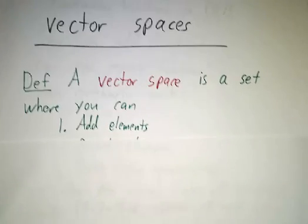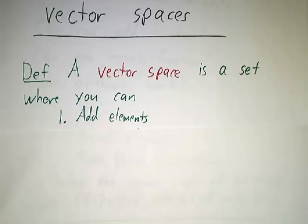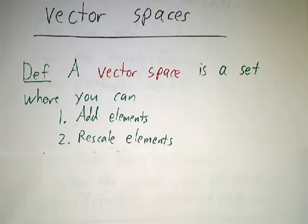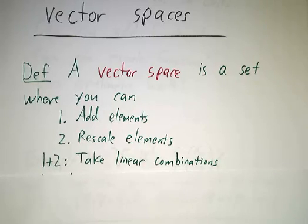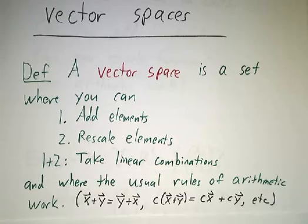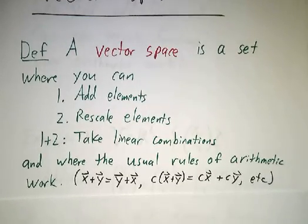So a vector space is any set where you're allowed to add two different elements, you're allowed to rescale elements, and if you can add things and rescale things, that means you can take linear combinations, and we want the usual rules of arithmetic to work. Now I'm not gonna write down all of the usual rules of arithmetic, but they're things like it doesn't matter what order you add things in, x plus y is the same thing as y plus x, or you have the distributive law, that a constant times x plus y is a constant times x plus the constant times y.